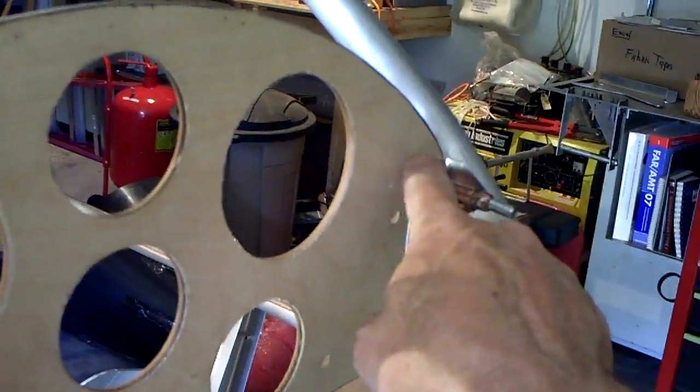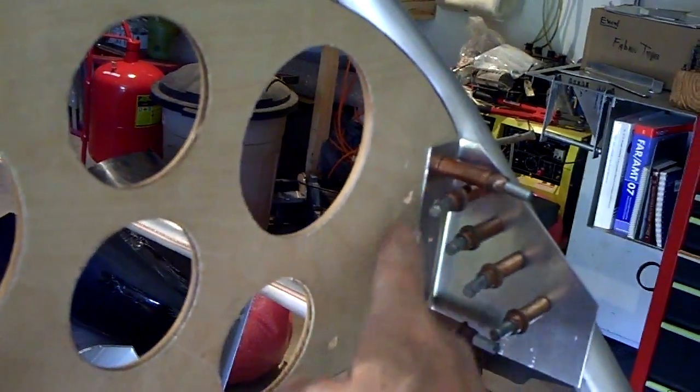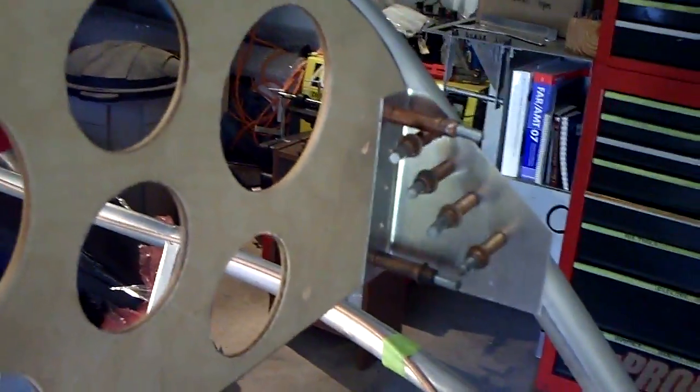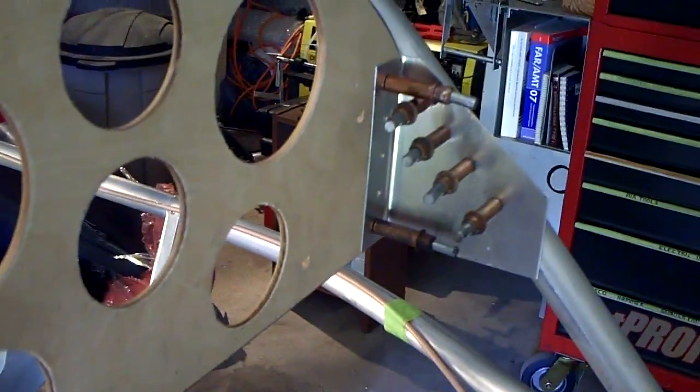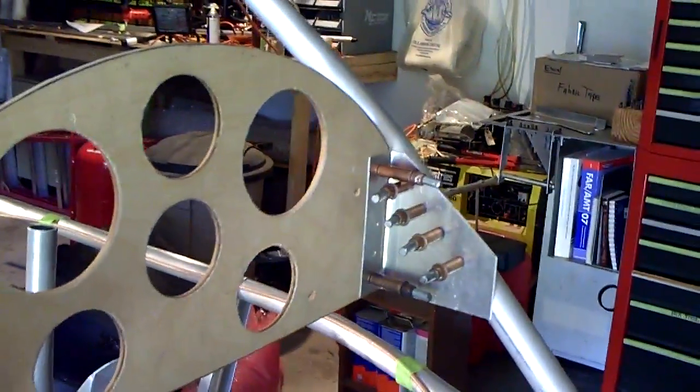Now I also plan to put some rubber pieces behind this bracket where the nut plates are going to attach so there will be a piece of rubber in there which will be used to insulate the panel from the vibrations of the airframe during flight.